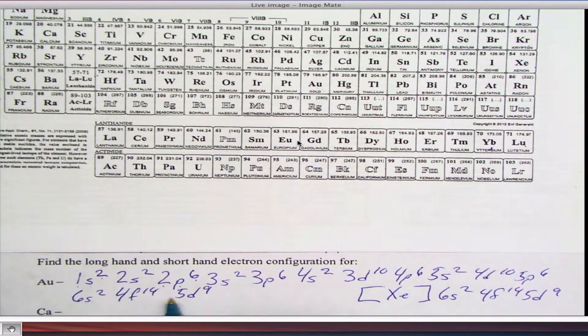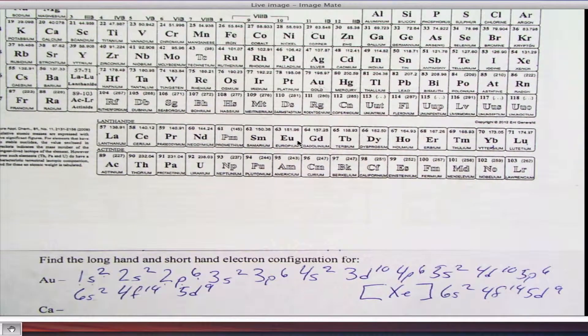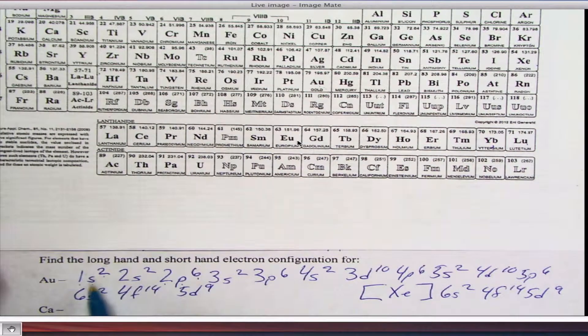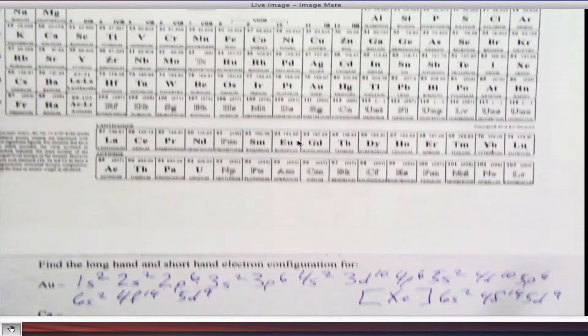When you get to the end of a row, you summarize it. Once you get to that element, you stop at that number. And that's what you write down for your final number. So you don't write every one down. You summarize each row up. So let's try another one. Let's try calcium.